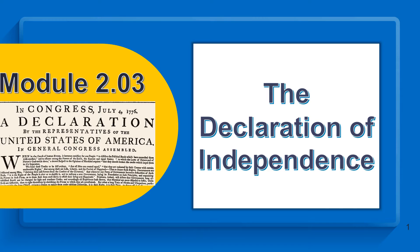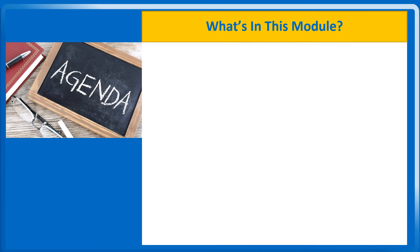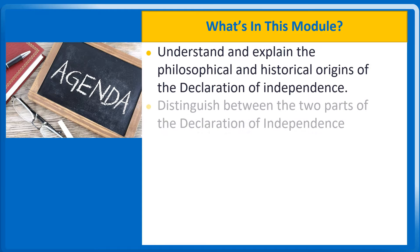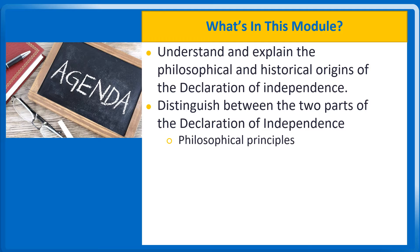Government 2305, Introduction to Federal Government, Module 2.03: The Declaration of Independence. After completing this module, you will be able to explain why the colonists revolted as well as develop an academic understanding.